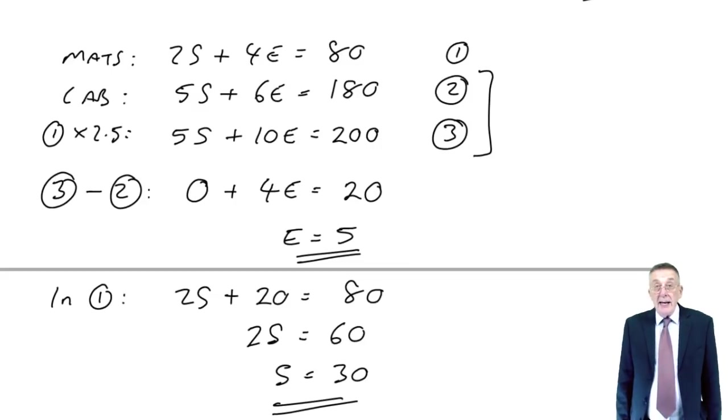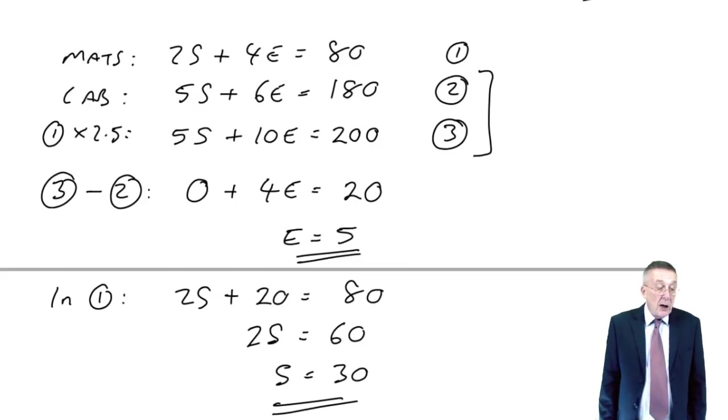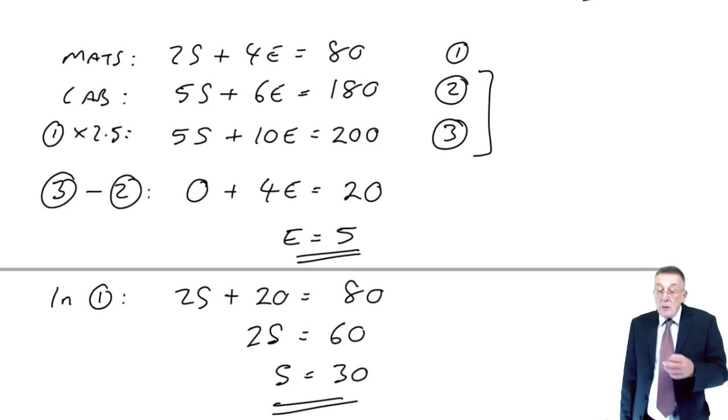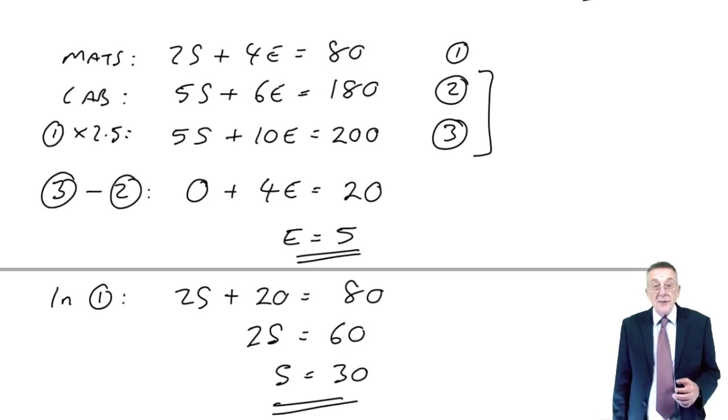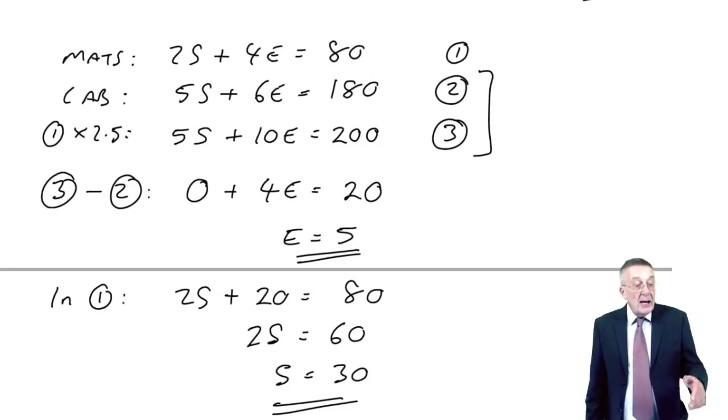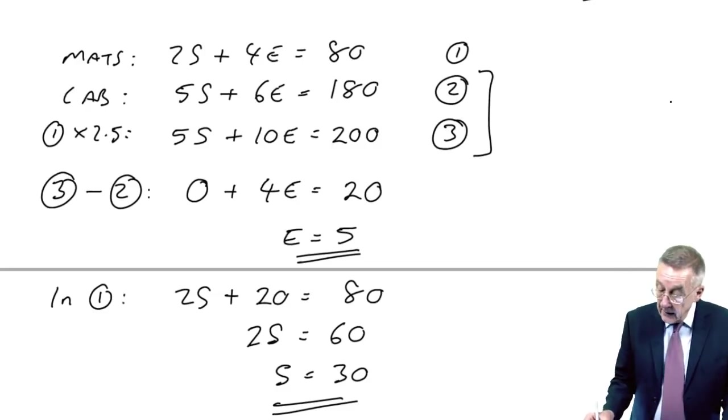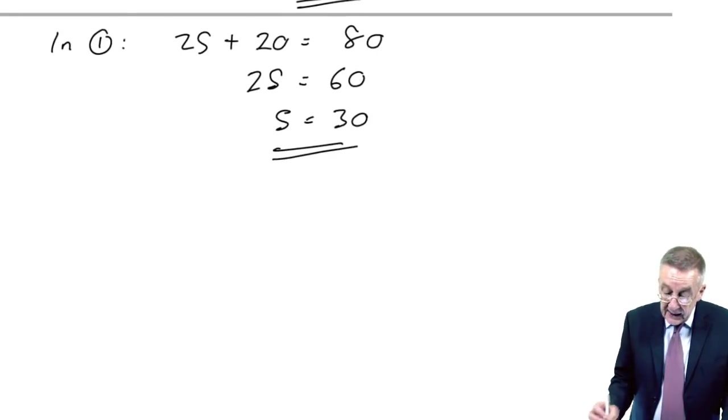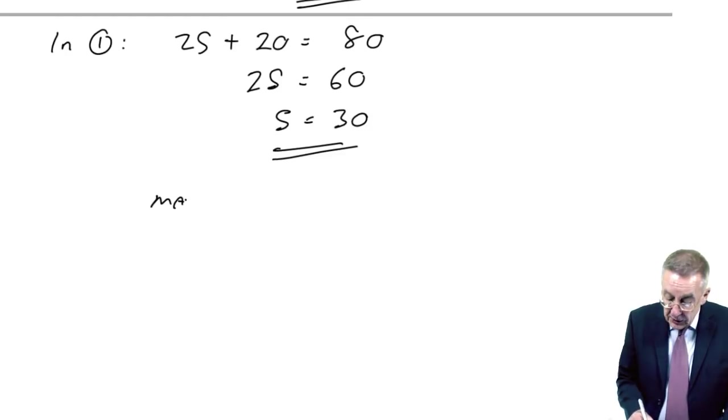And we're not quite there yet, because of course, although we now know our optimum production plan will produce 30 standards and 5 executives. The question did also want to know the maximum contribution, but that's now easy.